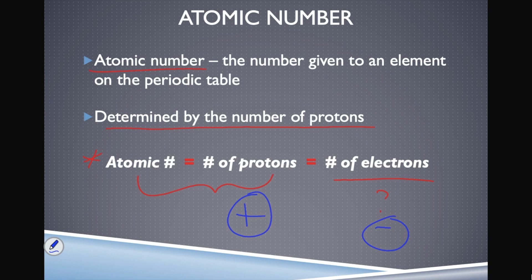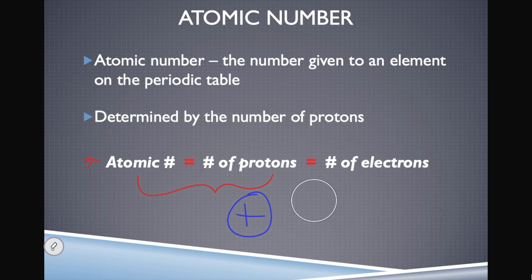Take-home message: all atoms are neutral, no overall charge. Therefore all atoms must have the same number of protons as electrons. How do we know how many protons? That's given to us by the atomic number. That's the first significant number when talking about atoms.